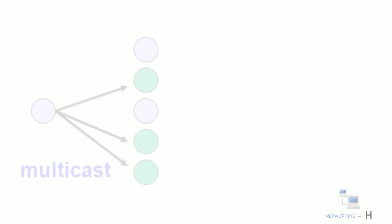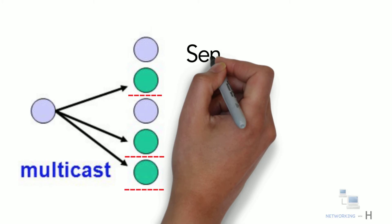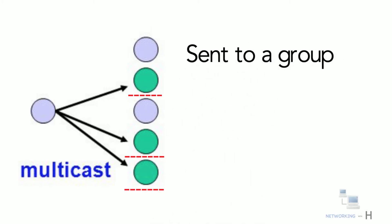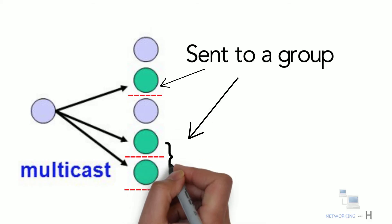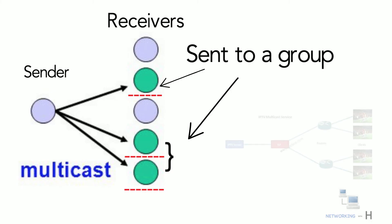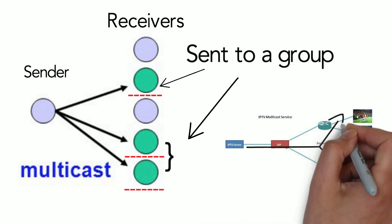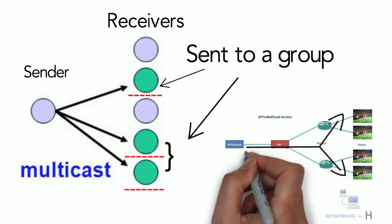Multicast is a term used to describe communication where a piece of information is sent from one point to a set of other points. Multicast traffic is addressed to a group of devices on the network, and only members of that group receive the multicast traffic. There may be one sender and the information is distributed to a set of receivers. For example, a TV channel — the multicast server generates one stream of data and that stream is replicated to different devices interested in that data.